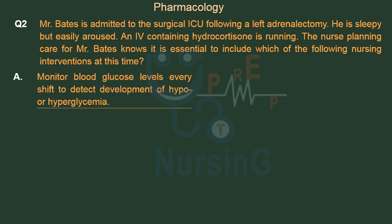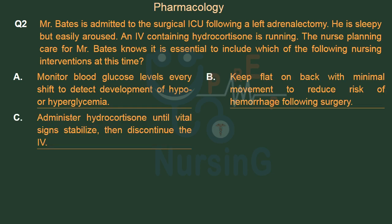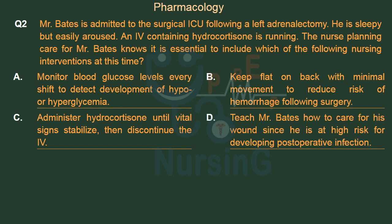Option A: Monitor blood glucose levels every shift to detect development of hypo- or hyperglycemia. Option B: Keep flat on back with minimal movement to reduce risk of hemorrhage following surgery. Option C: Administer hydrocortisone until vital signs stabilize, then discontinue. Option D: Teach Mr. Bates how to care for his wound since he is at high risk for developing post-operative infection. The right answer is Option A.